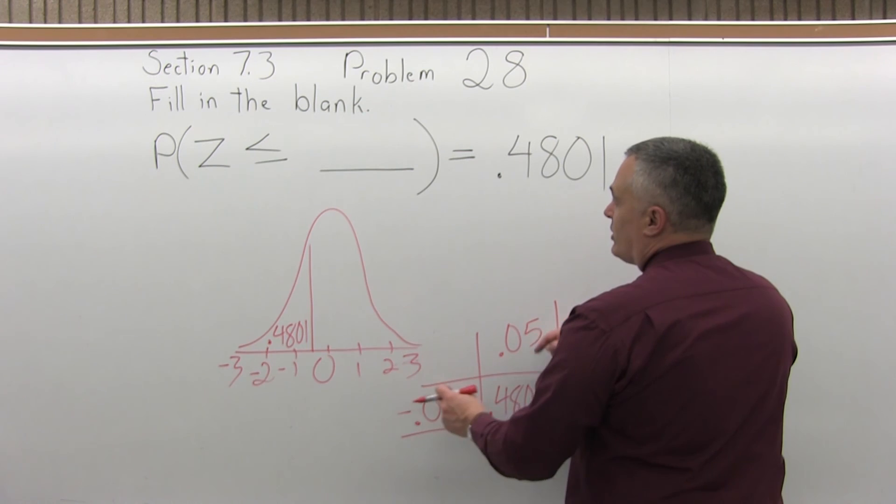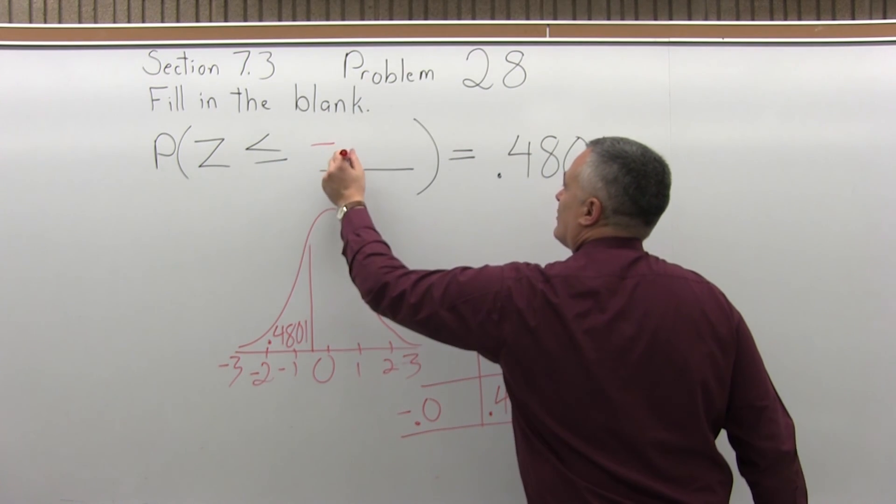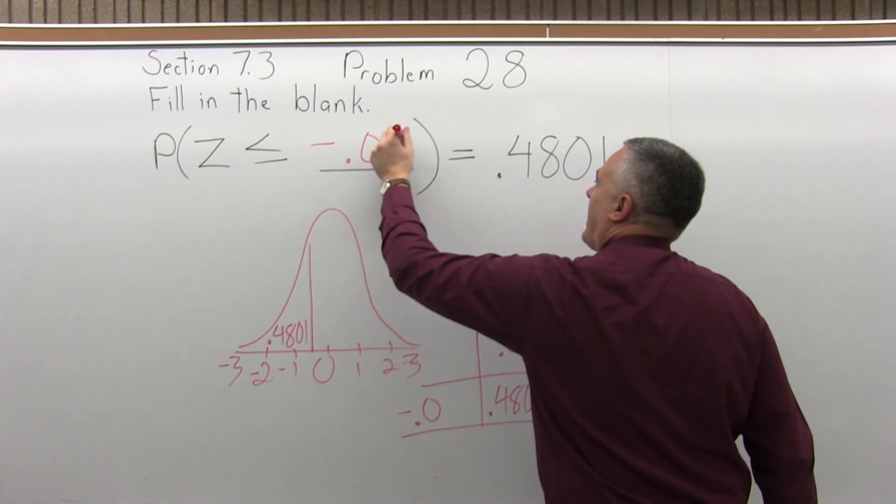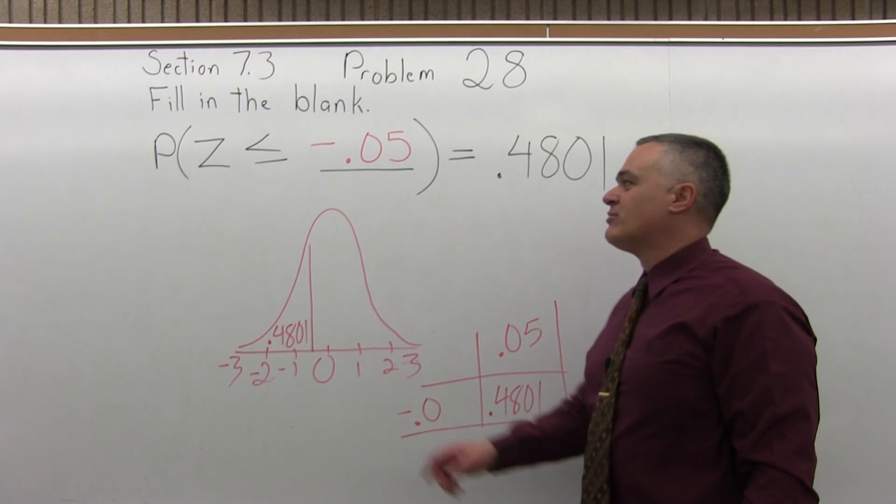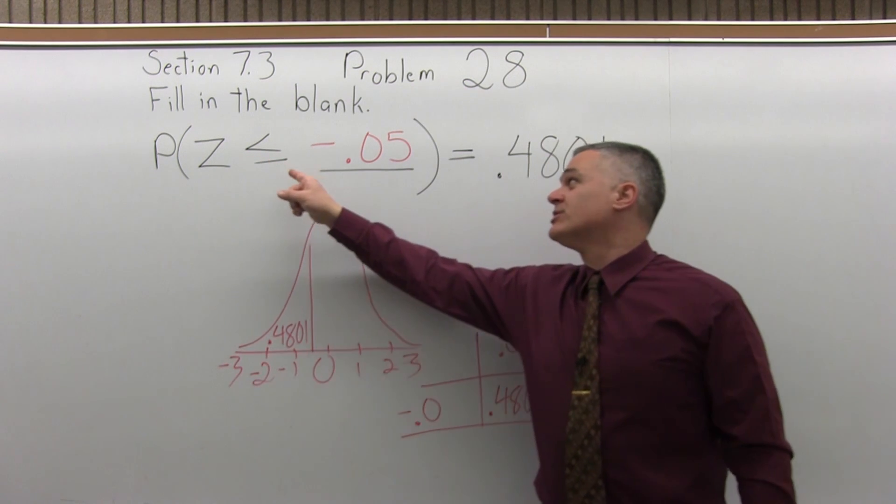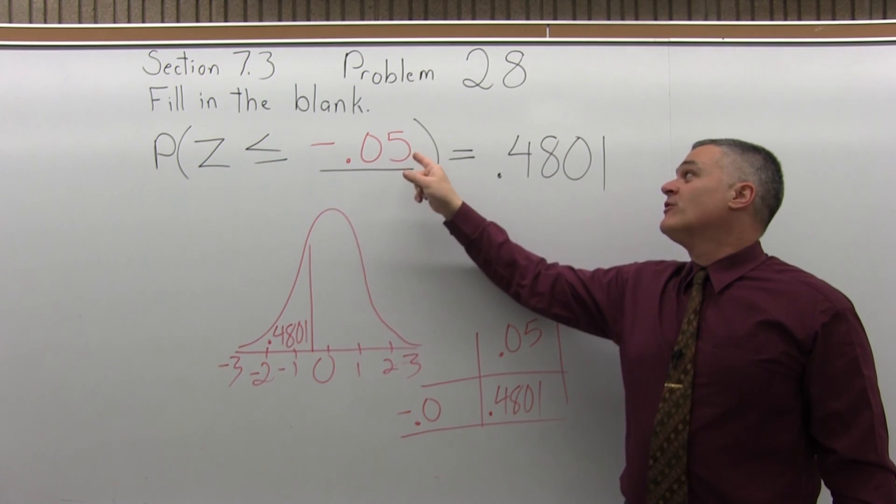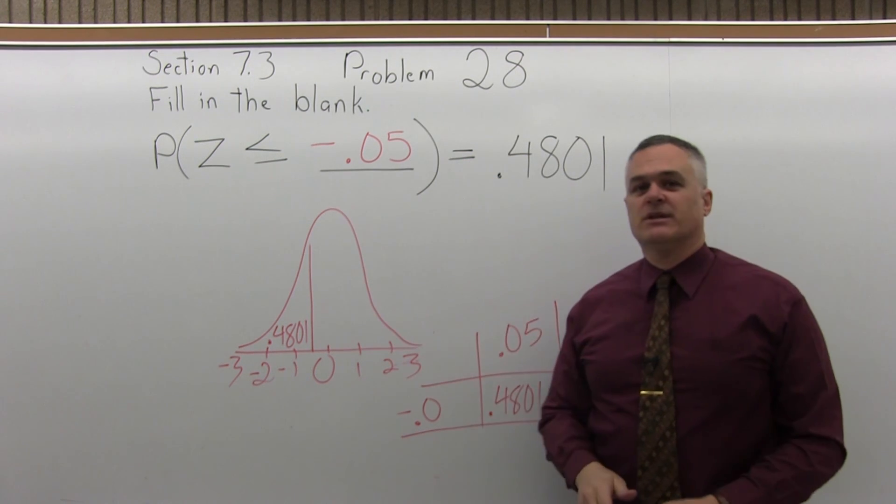So when you intersect those, what you would have looked up is negative .05. And that's what fills in the blank. The probability that z is less than or equal to negative .05 equals .4801.